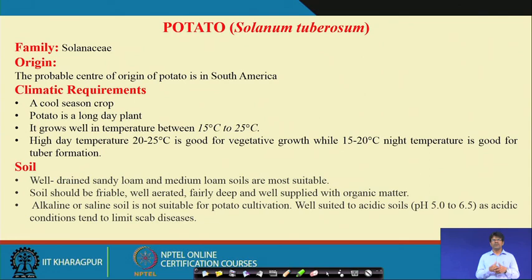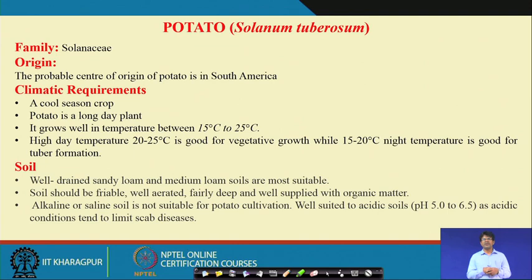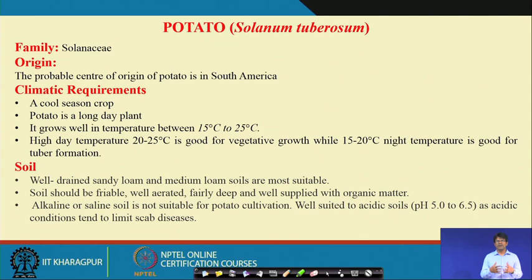Since tuber formation takes place underground, the crop needs well-aerated and porous soil to facilitate better swelling of the tuber. Well-drained sandy loam and medium loam soils are most preferred. The soil should be deeply tilled, well aerated, and well supplied with organic manures. Alkaline or saline soils are not suitable; a pH range of 5 to 6.5 helps avoid scab disease of potato.